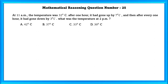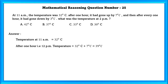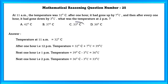Mathematical reasoning question number 25. At 11 a.m. the temperature was 32 degrees Celsius. After one hour it had gone up by 7 degrees. Then after every one hour it had gone down by 3 degrees Celsius. What was the temperature at 2 p.m.? Temperature at 11 a.m. is 32°C. At 12 p.m. the temperature is 39°C. At 1 p.m. it is 36°C. So at 2 p.m. it would be 33 degrees Celsius.